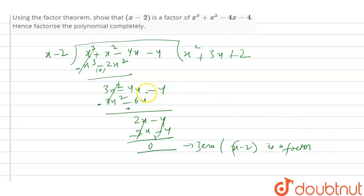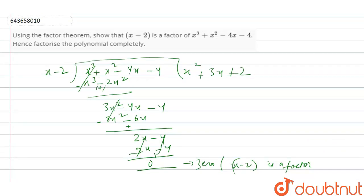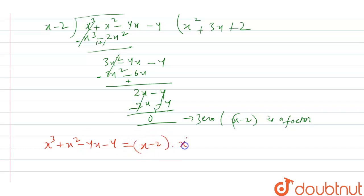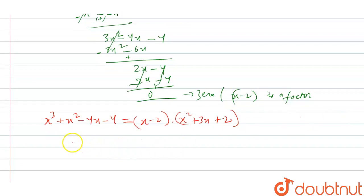Now we have to factorize the polynomial completely. We can write x³ + x² − 4x − 4 as (x − 2)(x² + 3x + 2). So x minus 2 is one factor. Now we will find the other two factors from x² + 3x + 2.